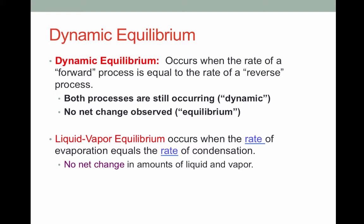For our purposes here, we're going to be looking at liquid-vapor equilibrium. This occurs when the rate of evaporation equals the rate of condensation. The amount of liquid and vapor will be constant — there will be no net change — even though some liquid is still becoming vapor and some vapor is still becoming liquid.